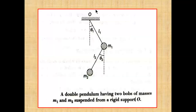This is the double pendulum — the angle for the first pendulum is theta one and for the second is theta two, with masses M1 and M2 suspended. To describe the motion, only two coordinates are necessary in the polar coordinate system: theta one and theta two. It is easier to take the polar coordinate system for this type of system.